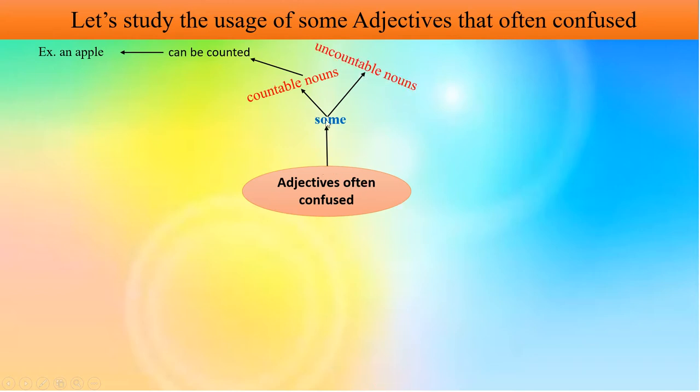Some is used in uncountable nouns. Uncountable nouns cannot be counted. Examples: air, rice, water.